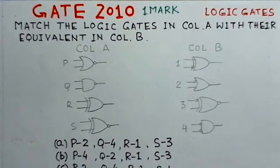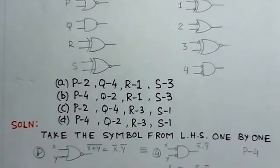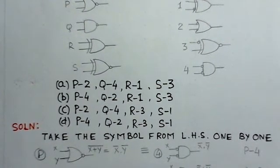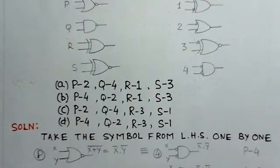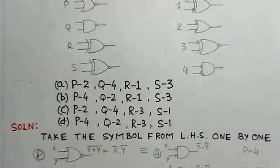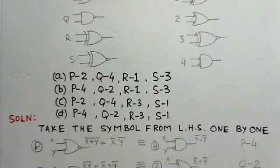P2, Q4, and all that - these options are there and we have to find out which gate corresponds to which gate on the right-hand side. To solve such problems, the best way is to take up gates from column A one by one and use the De Morgan's theorem to find out the equivalent gate.